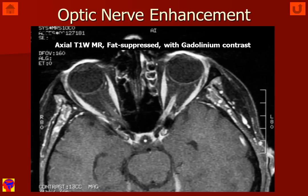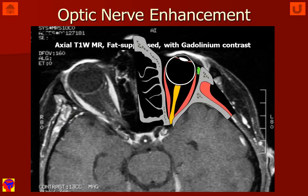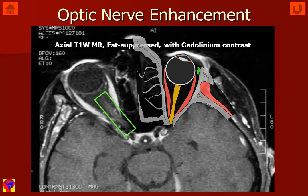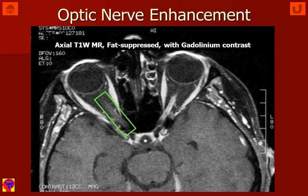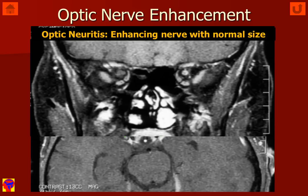If we look again at this axial T1-weighted MR, fat-suppressed with gadolinium enhancement, and we imagine what we're seeing from reference to the diagram, we can see in the patient's normal right orbit inside the green rectangle that the normal optic nerve does not enhance. However, in the patient's left orbit, we can see abnormal enhancement of the optic nerve, but the nerve itself is not enlarged. This is most consistent with an optic neuritis.